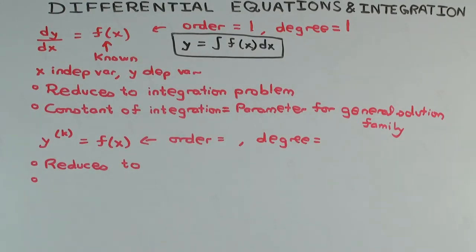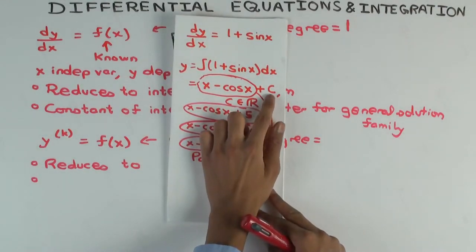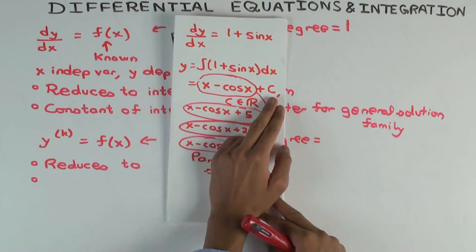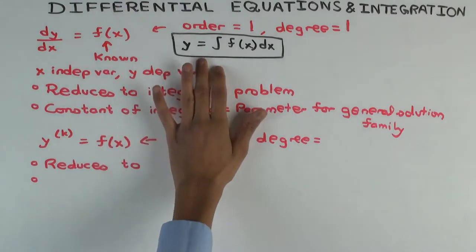We managed to reduce it to an integration problem directly, and we noticed that the constant of integration is a parameter for the general solution family. For different values of this constant, you get different particular solutions. This idea continues to hold for other first order differential equations, even though they can't be solved in this simple fashion.